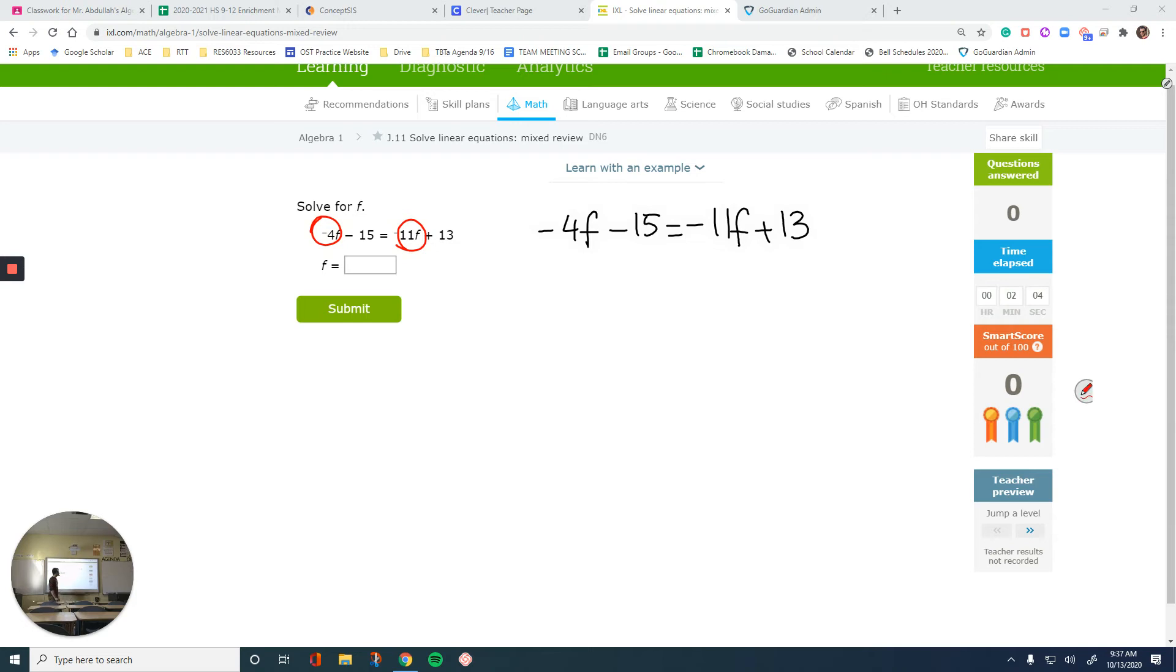Negative 11f plus 13. So if I focus on the variables first, I want to add 11 instead of adding 4 so that I can end up with a positive variable. On the left, I'll have negative 4 plus 11. That's 7f minus 15 equals 13. I just drop it down. It is positive.